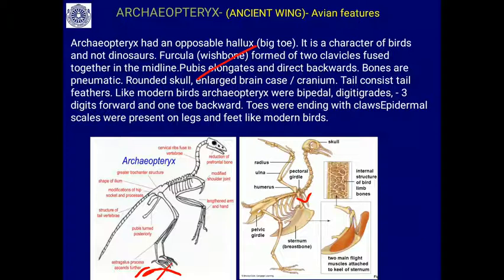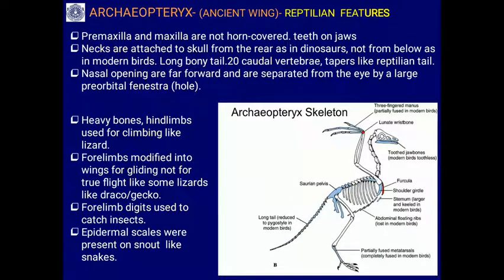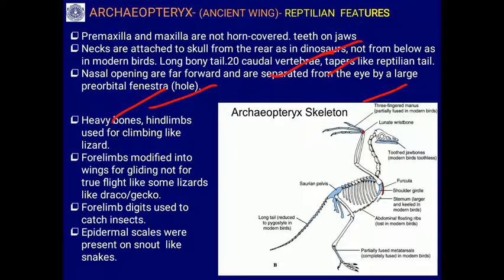Further avian characters: the tail consists of tail feathers like modern birds; Archaeopteryx was bipedal and digitigrade; it had three digits forward and one toe backward; epidermal scales were present on the legs and feet like modern birds. Reptilian characters include: premaxilla and maxilla jaw bones not horn-covered, with teeth present on the jaw; the skull is attached similarly to dinosaurs; there are 20 caudal vertebrae like reptiles; nasal openings are forward and separated from the eye; and there is a pre-orbital fenestra (a hole in front of the orbit).